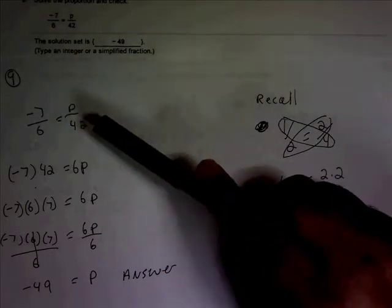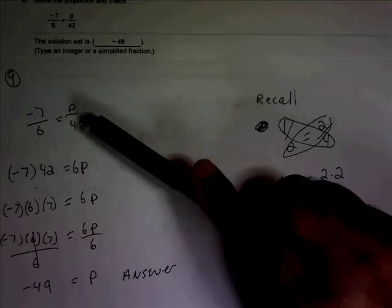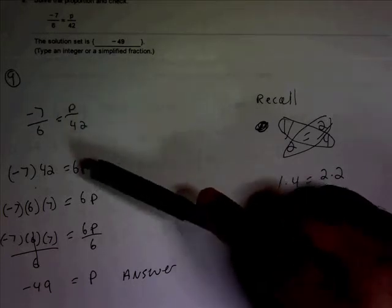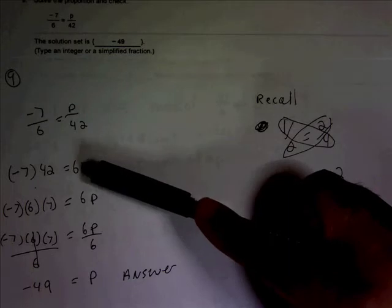We can use the cross product property over here to solve the equation for p. So I'm going to have 6 times p is equal to negative 7 times 42.